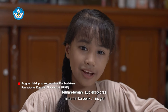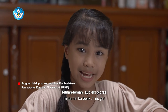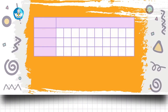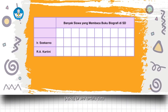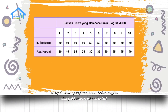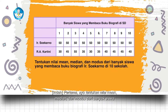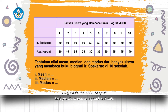Teman-teman, ayo eksplorasi matematika berikut ini ya, tulis jawabannya di buku catatan. Di sini tertulis data banyak siswa yang membaca buku biografi dua pahlawan nasional di SD, yaitu biografi Insinyur Soekarno dan Raden Ajeng Kartini. Pertama, ayo tentukan nilai min, median, dan modus dari banyak siswa yang telah membaca biografi Insinyur Soekarno di 10 sekolah.